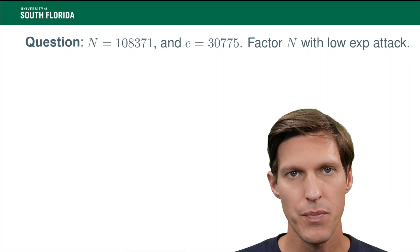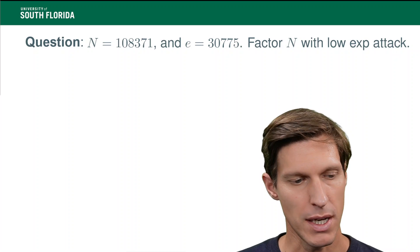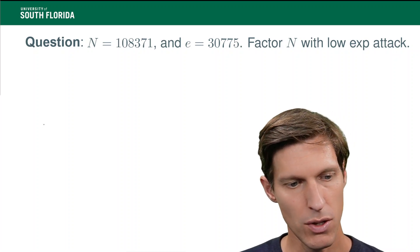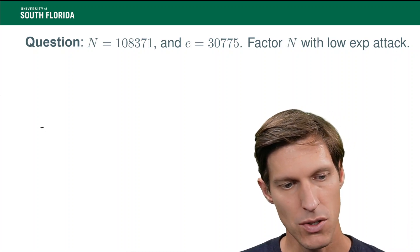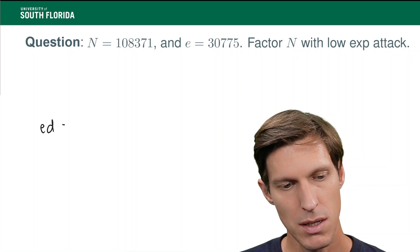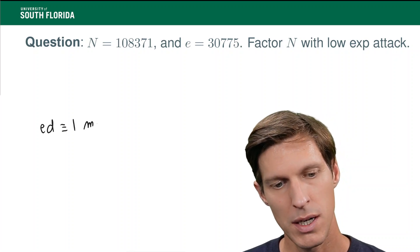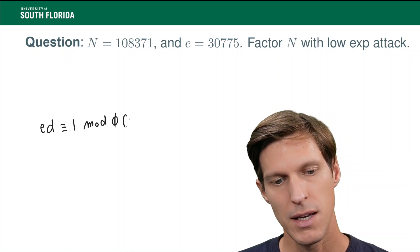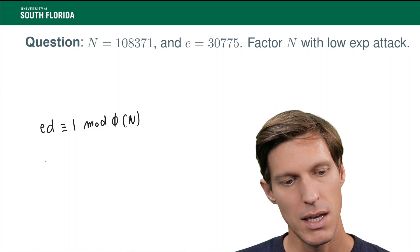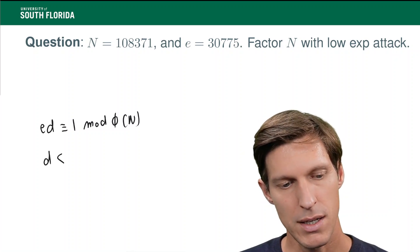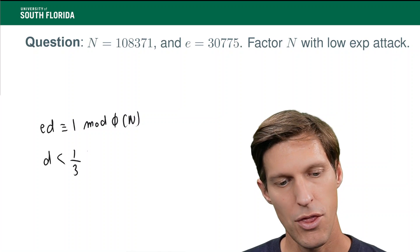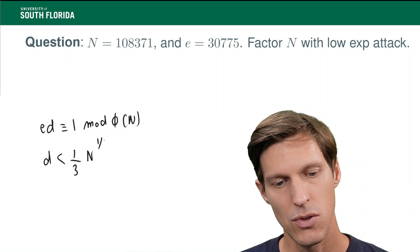First, what does it mean low exponent attack? It applies only when the private exponent d, so remember e times d is congruent to 1 mod phi of n, and the low exponent attack applies when d is less than one-third times n to the one-fourth.